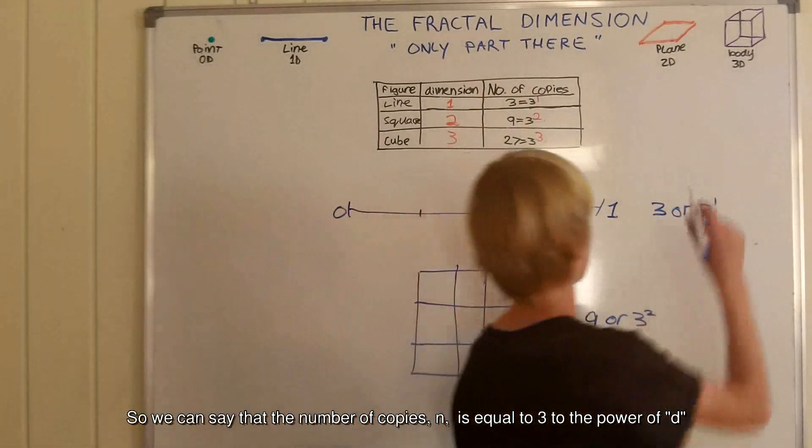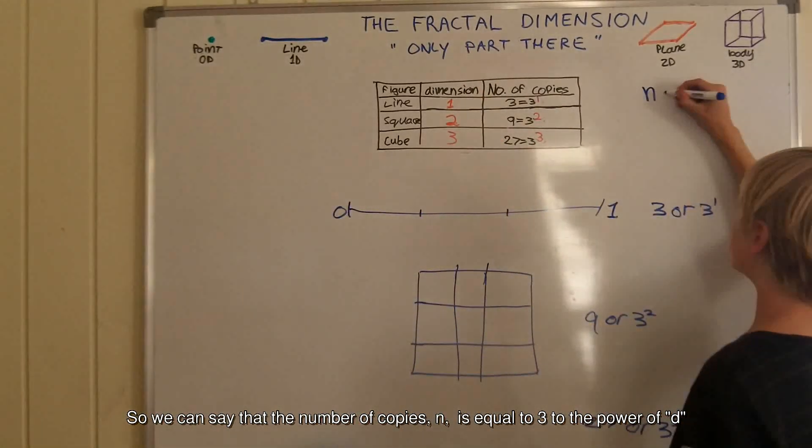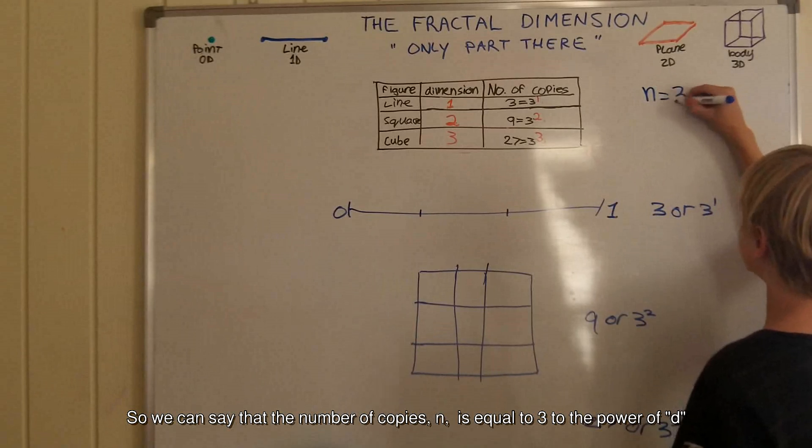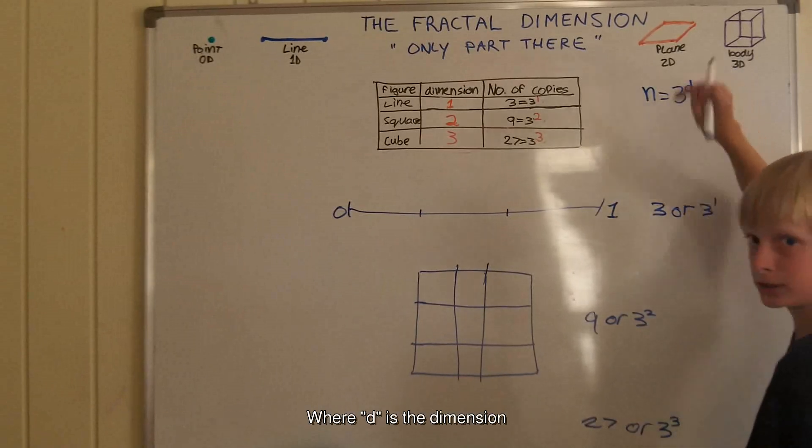So we can say that the number of copies, n, is equal to 3 to the power of d, where d is the dimension.